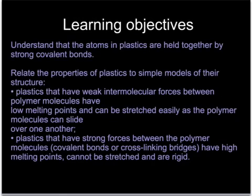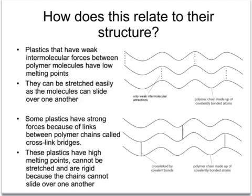At higher level you need to know about the properties of two particular types of plastics — those which are rigid and those which are more flexible at room temperature — and explain why they are different because of the different types of forces that exist between the chains. You'll already be aware that there are two types of plastic in the world: those which are stretchy and flexible, and those which are hard and rigid.